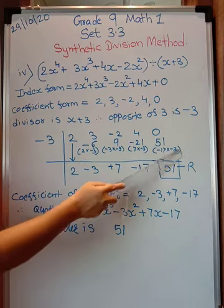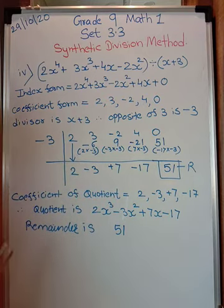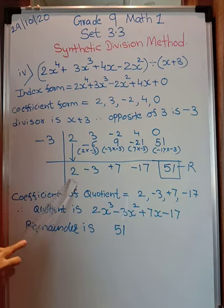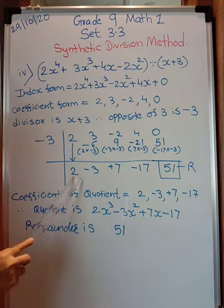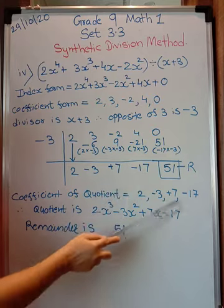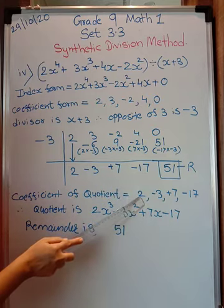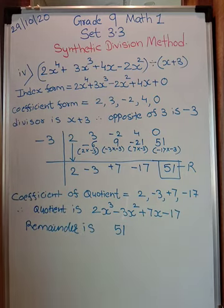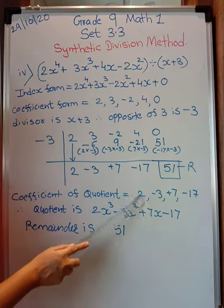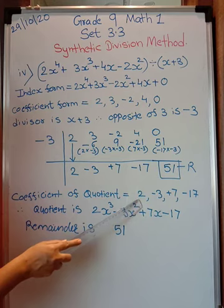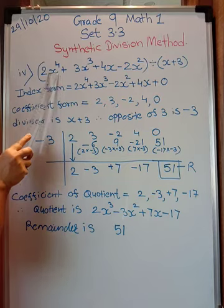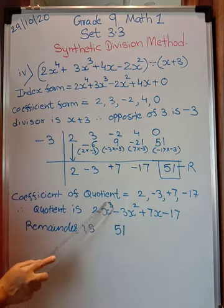I have written this for your reference — you may erase it and do it orally. Now the last term you get is always the remainder. That means these 4 terms are related to the quotient. So the coefficients of the quotient are: 2, minus 3, plus 7, minus 17. Now if these are the coefficient form, what should the quotient be in terms of the variable? There are 4 coefficients, so 4 minus 1 is 3 — the highest power of the variable x should be 3.